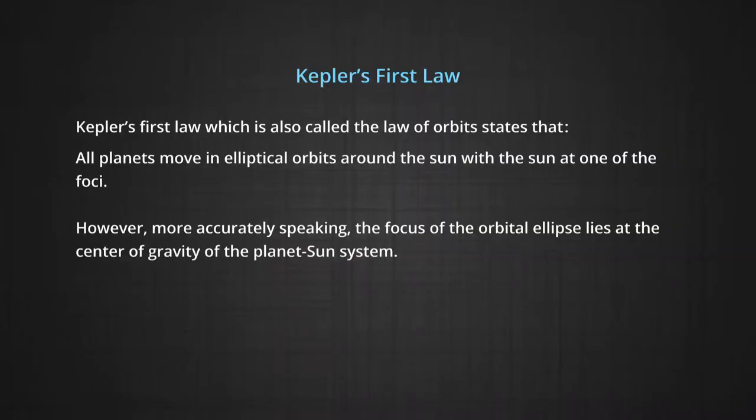Kepler's first law, which is also called the law of orbits, states that all planets move in elliptical orbits around the sun with the sun at one of the foci.